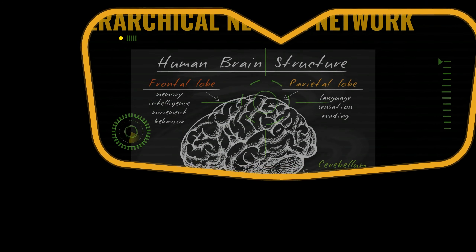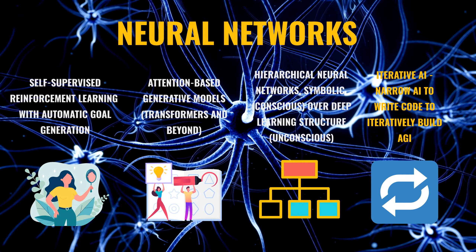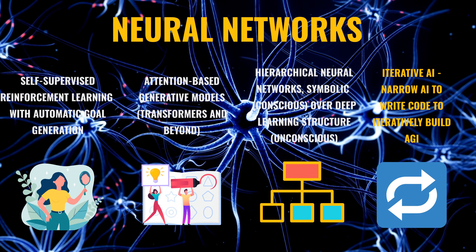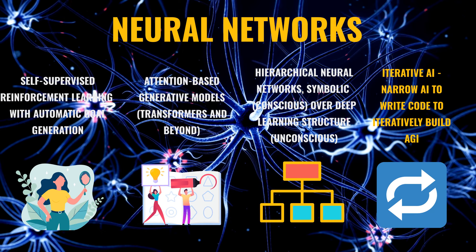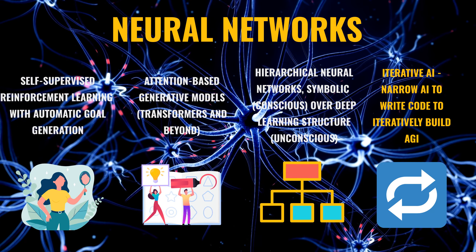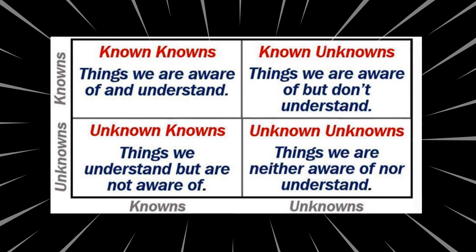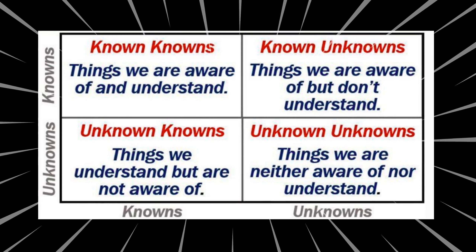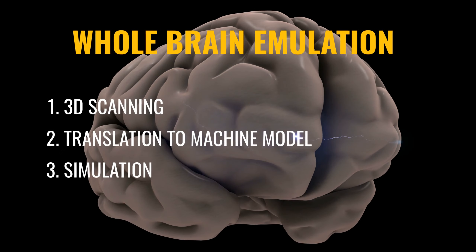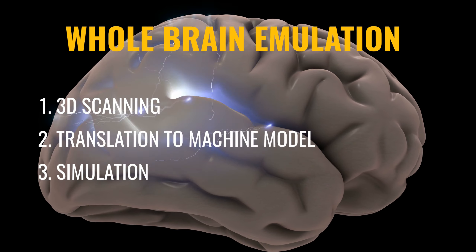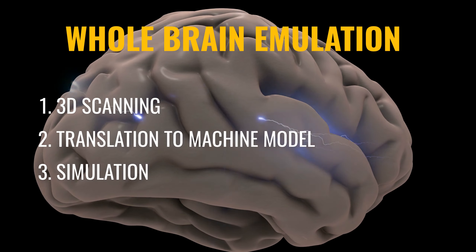The third hypothetical path is to use hierarchical neural networks, with symbolic structure managing a deep learning structure. This is similar to how our brain works, with a conscious layer interacting with an unconscious layer. The fourth possible path is to implement an iterative AI, where a narrow AI is assigned to write code to build an intelligent agent through many iterations. While neural networks in general is probably our most promising approach, we still have lots of unknown unknowns to overcome.